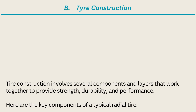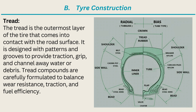Tire Construction: Tire construction involves several components and layers that work together to provide strength, durability, and performance. Here are the key components of a typical radial tire. Tread: the tread is the outermost layer of the tire that comes into contact with the road surface. It is designed with patterns and grooves to provide traction, grip, and channel away water or debris. Tread compounds are carefully formulated to balance wear resistance, traction, and fuel efficiency.